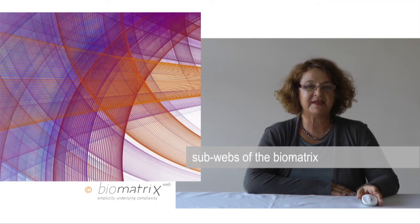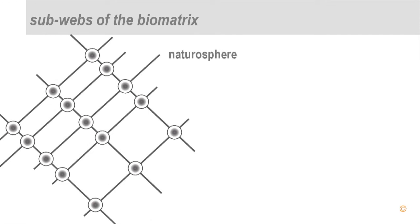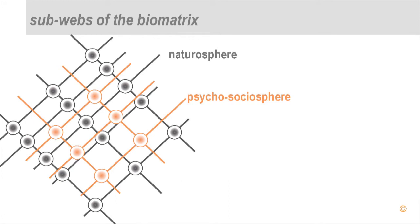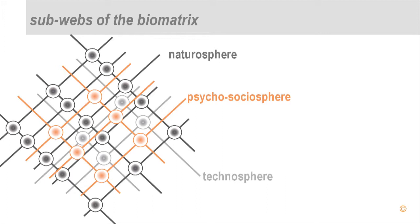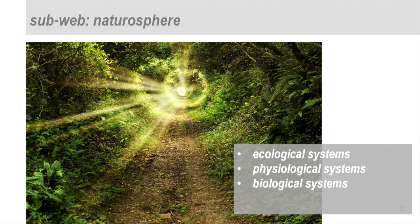We can distinguish three sub-webs within the biometrics. The first web is that of the natural sphere — nature systems, the web of life. Intertwined with that is the web of the psychosocio-sphere: the psychological systems in the mind of entities and social interaction between entities, especially human entities. And there is the technosphere — the web of technological systems. The natural sphere covers ecological systems like soil, water, oceans, and climate, physiological systems of the organism, biological systems studied in chemistry, cellular functioning, and physical systems at the atomic and subatomic level.